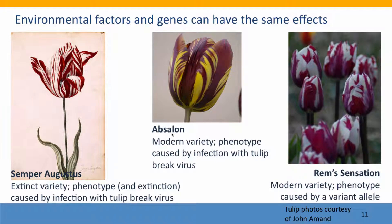I want to end by considering the extent to which environmental factors and genes can have the same effects. A wonderful example comes from tulips. Several centuries ago, one of the very first catastrophic financial bubbles involved people buying and selling exotic tulips. We now know that these exotic tulips had their dramatic phenotypes — this is a very old illustration of one of those tulips — and that this dramatic phenotype is caused by infection with a virus called tulip break virus.